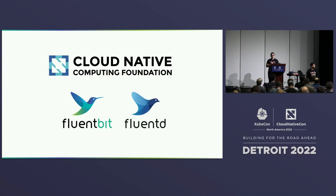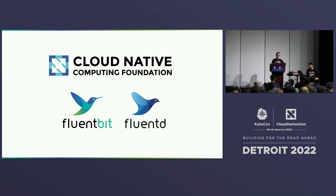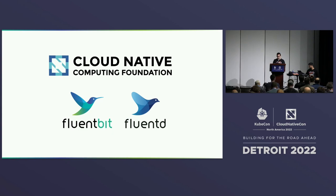FluentBit is part of the FluentD family project, and both solve one of the problems — moving data from one place to the other. That's basically how it started, but in the middle we can do processing, data reduction, and a bunch of things that maybe you are already aware of.